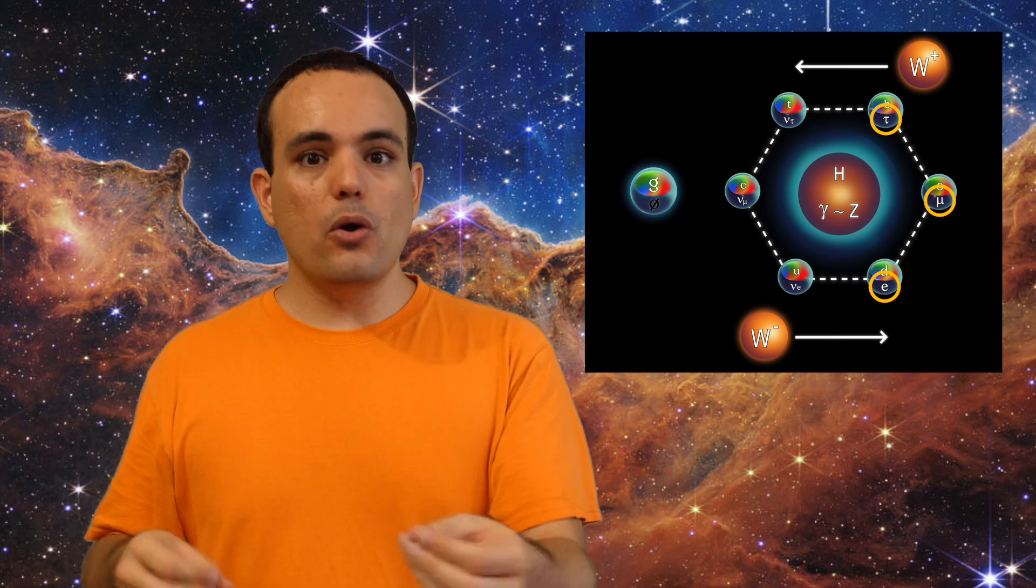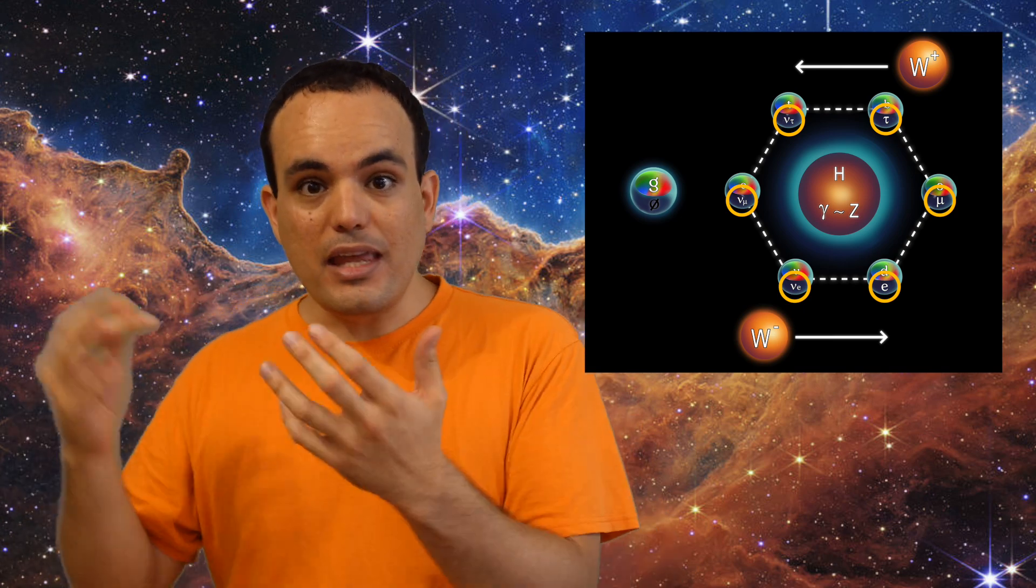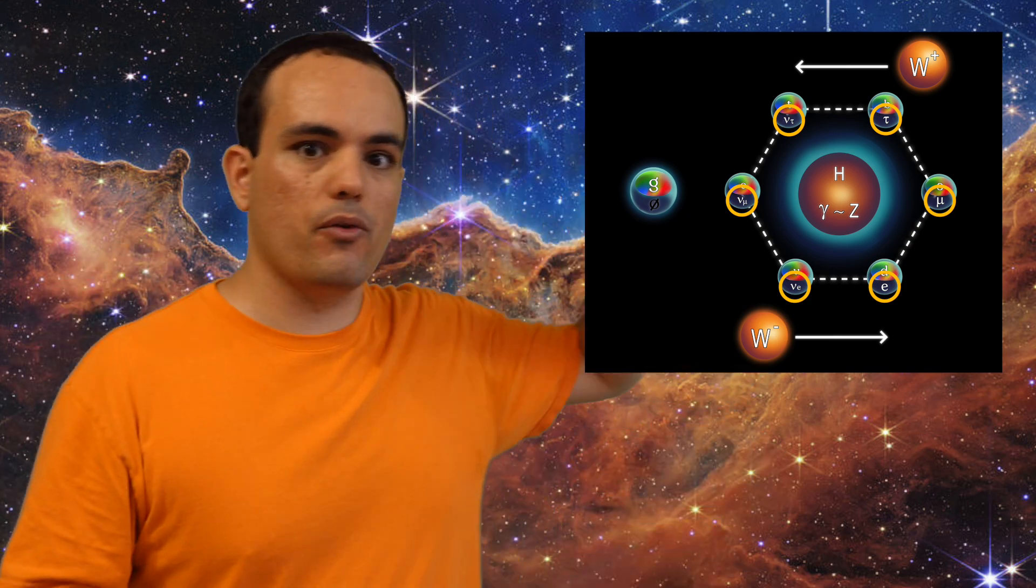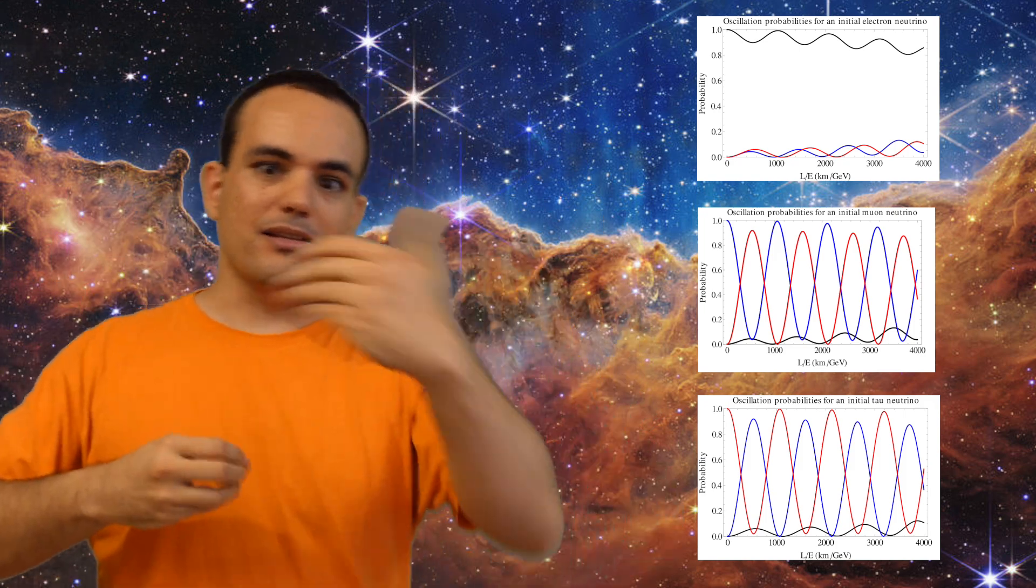The electron muon and tau also have their corresponding neutrinos. And these neutrinos not only have different masses, but they can also somehow keep track of which is their partner. And if they absorb a W boson, they will transform into that partner and not the other leptons. Most of the time. So what happens is that the probability that a neutrino will transform into the right particle changes cyclically over time. And this cycle is different for each neutrino. And we have measured this, but not as precisely as we would like.